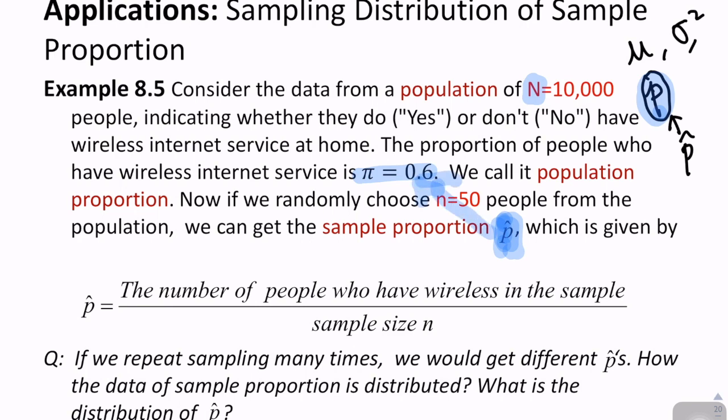So the question is, if we repeat sampling many times, we would get different p hats. How is the data of sample proportion distributed, and what is the distribution of p hat?